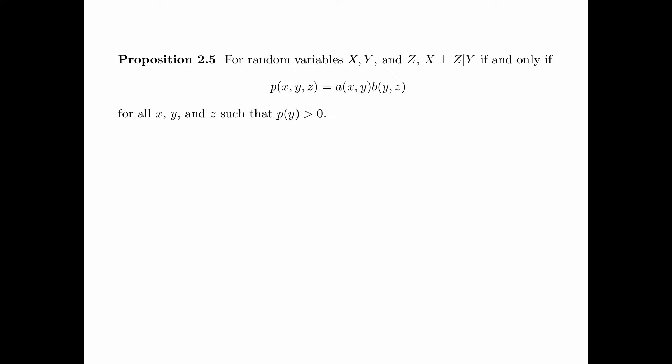Proposition 2.5 is a very powerful result that will be used over and over again throughout this course. It says that for random variables x, y, and z, x is independent of z conditioning on y, if and only if p can be factorized as a(x,y) times b(y,z) for all x, y, and z such that p(y) is bigger than 0.